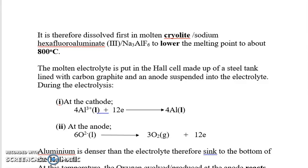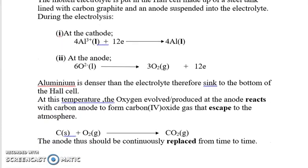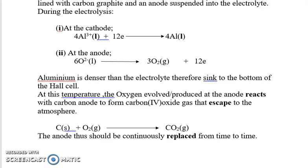The molten electrolyte is held in a Hall cell made up of a steel tank lined with carbon graphite, with an anode suspended in the electrolyte. During electrolysis, at the cathode, aluminium ions gain electrons to form aluminium metal, while the oxide ions lose electrons to form oxygen gas. Aluminium is denser than the electrolyte, therefore it sinks to the bottom of the Hall cell.